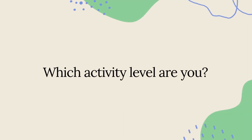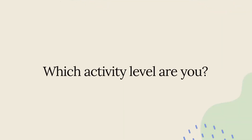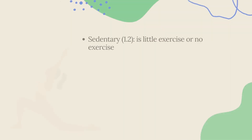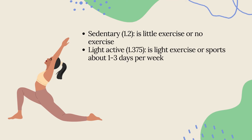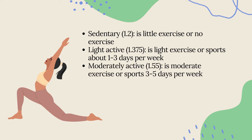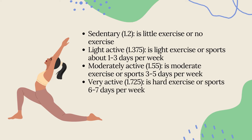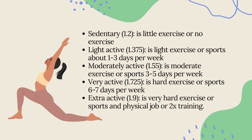There are five activity levels — which one are you? Sedentary means little or no exercise. Light activity is light exercise or sport about one to three days per week. Moderately active is moderate exercise or sports three to five days per week. Very active is hard exercise or sports six to seven days per week. Extra active is very hard exercise, a physical job, or two-a-day training.